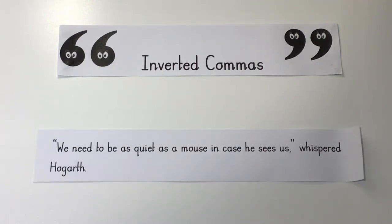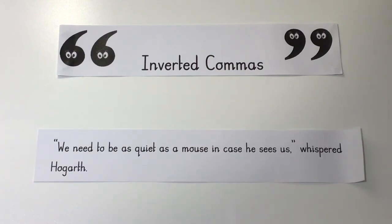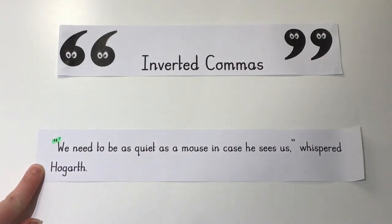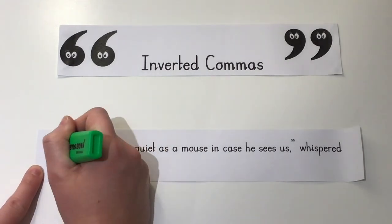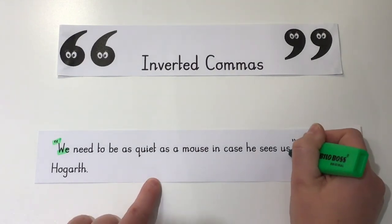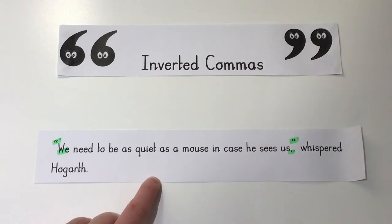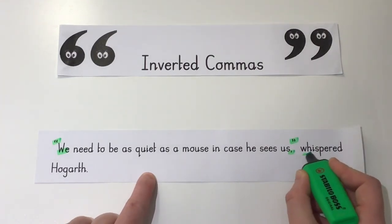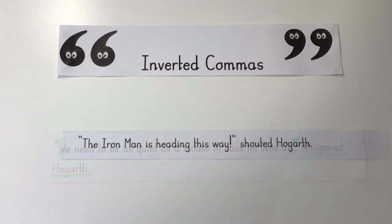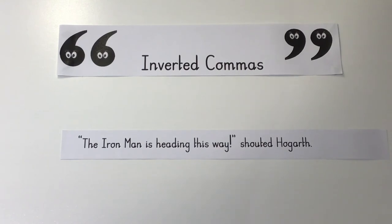Here is an alternative sentence with a different verb in the reporting clause. Rather than 'said,' it says 'whispered Hogarth.' This helps when reading aloud because we know how Hogarth said it: "We need to be as quiet as a mouse in case he sees us," whispered Hogarth. We have our opening inverted commas, a capital letter to begin, a comma as punctuation, our closing inverted commas, and our reporting clause — whispered Hogarth — telling us who said it and how.